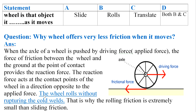Write the next statement with a blue marker and underline it: the wheel rolls without rupturing the cold welds. Cold welds means interlocking. If the wheel does not rupture the cold welds — you hear a rupturing sound when a car is about to drift — then the rolling friction is extremely small compared to sliding friction. If something does not rupture the cold welds, friction is reduced many times. So sliding friction is more than rolling friction.